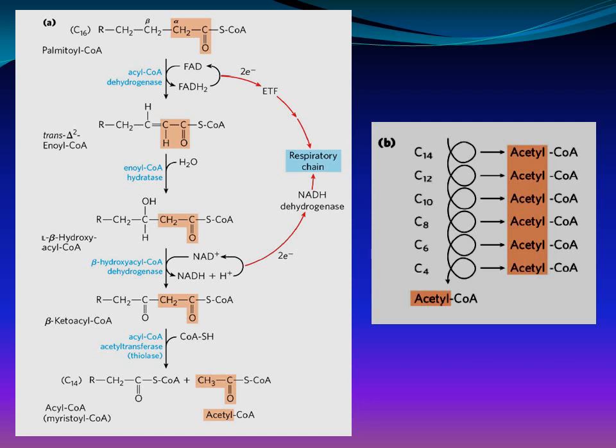Beta oxidation is a spiral rather than a cycle. In the last spiral, cleavage of the four-carbon fatty acyl-CoA provides two acetyl-CoAs. Even-chain fatty acids such as palmitoyl-CoA, which has 16 carbons, is cleaved 7 times to produce 7 FADH2, 7 NADH, and 8 acetyl-CoA.